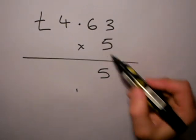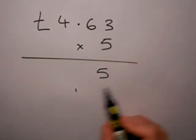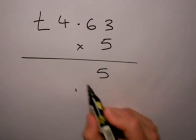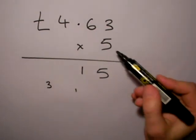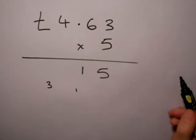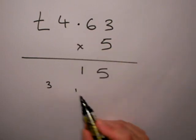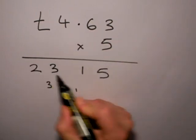Then I move on to do 5 times 6, which is 30. Don't forget the 1, so that's 31. 1 down and carry my 3 across. And then finally 5 times 4, which is 20, plus the 3, 23, and I write that down.